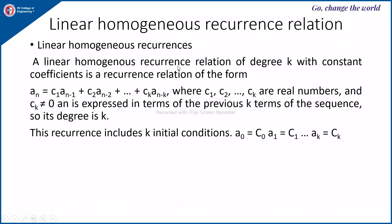A linear homogeneous recurrence relation of degree k with constant coefficients has the form: a(n) = c1·a(n-1) + c2·a(n-2) + ... + ck·a(n-k), where c1, c2, ..., ck are real numbers and ck is not equal to 0. If ck were 0, the degree would be n-k-1. Each term is expressed in terms of the previous k terms, so the degree is k, and the recurrence requires k initial conditions.